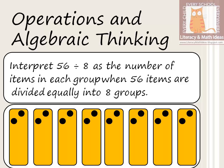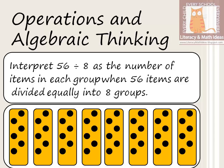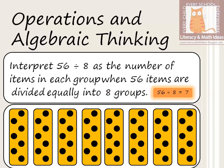Continuing the distribution: 24, 32, 40, 48, and then 56 — we stop here because we've reached the starting number. Counting the items in each group, we have seven. That is the first approach to the meaning of division, and that's how we know 56 divided by 8 is 7.